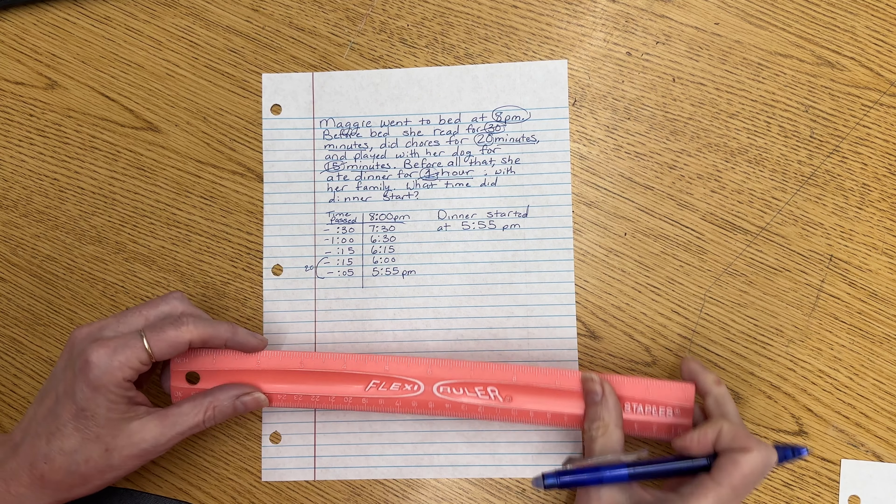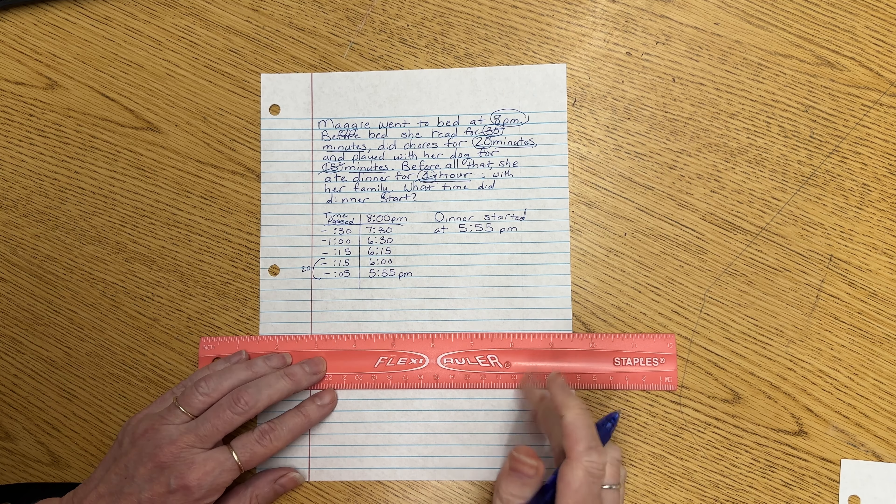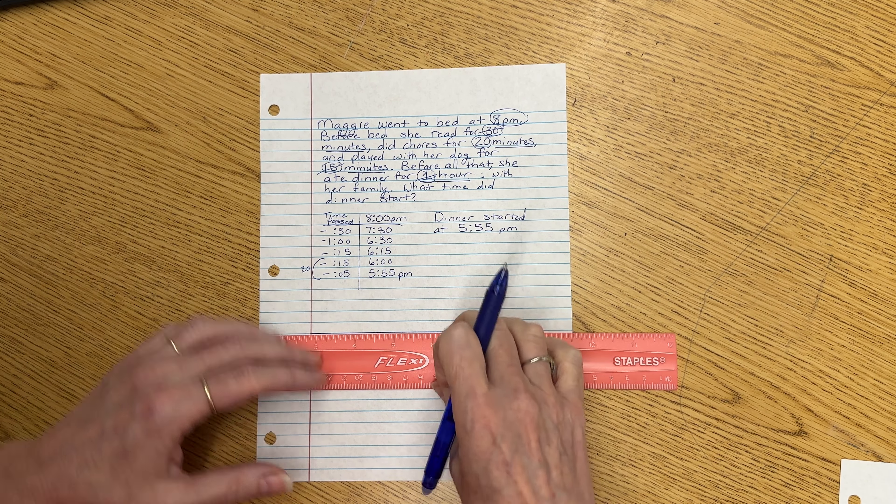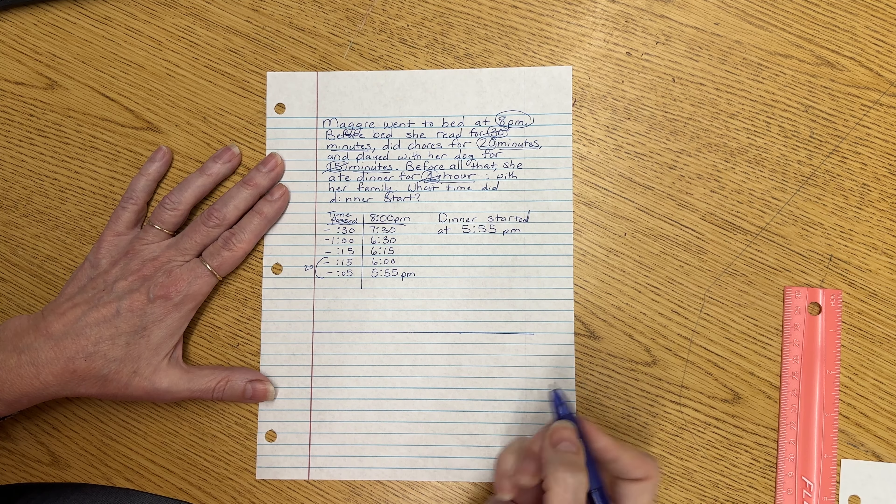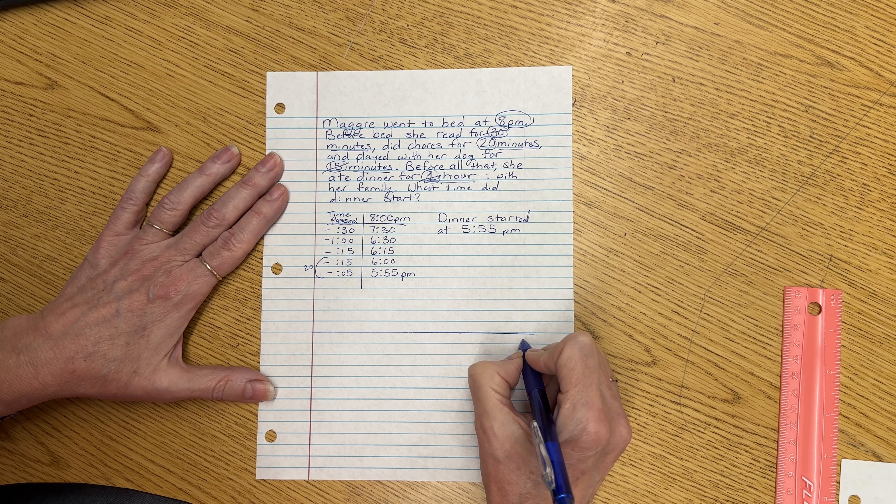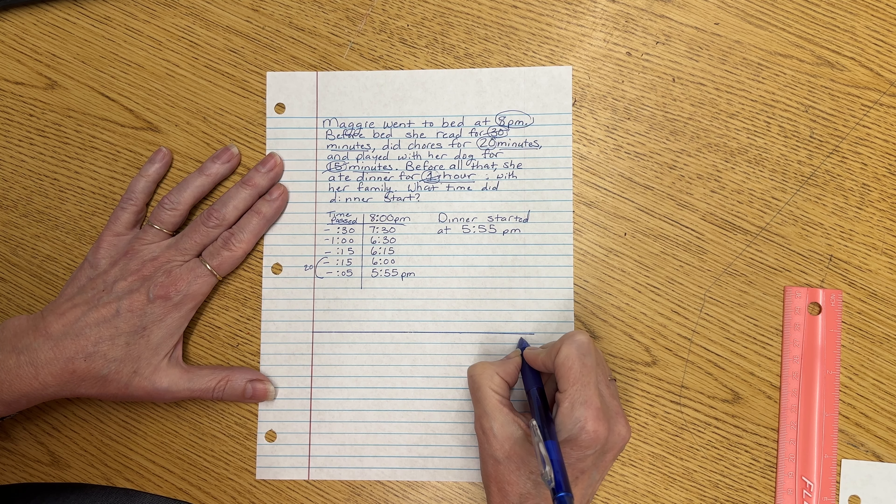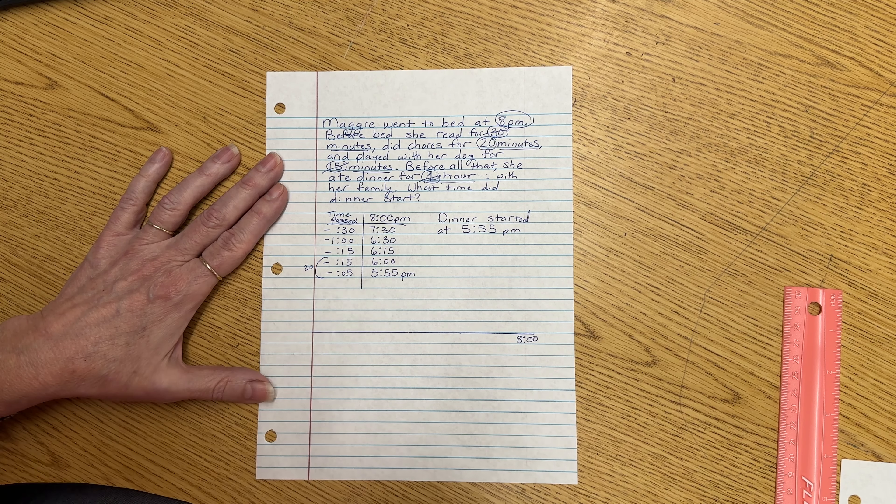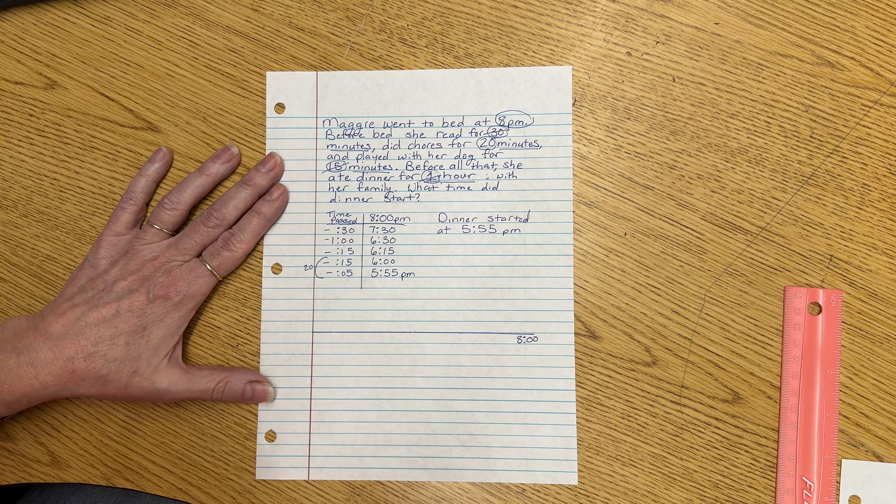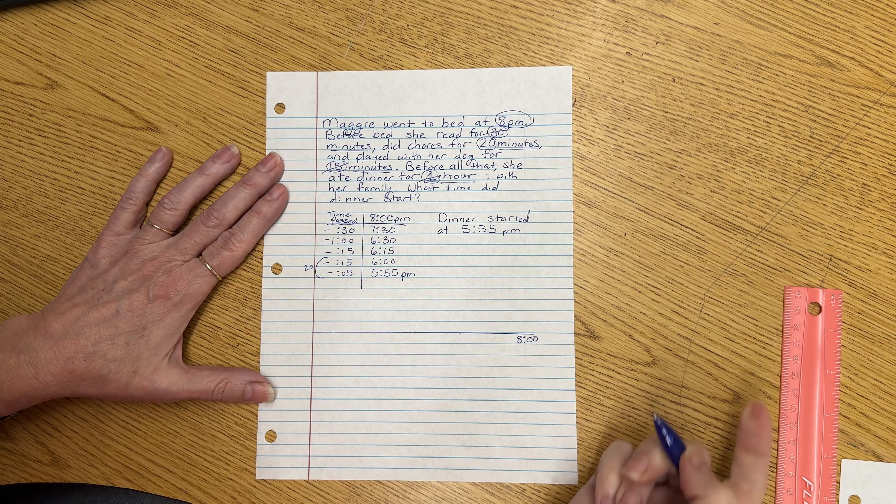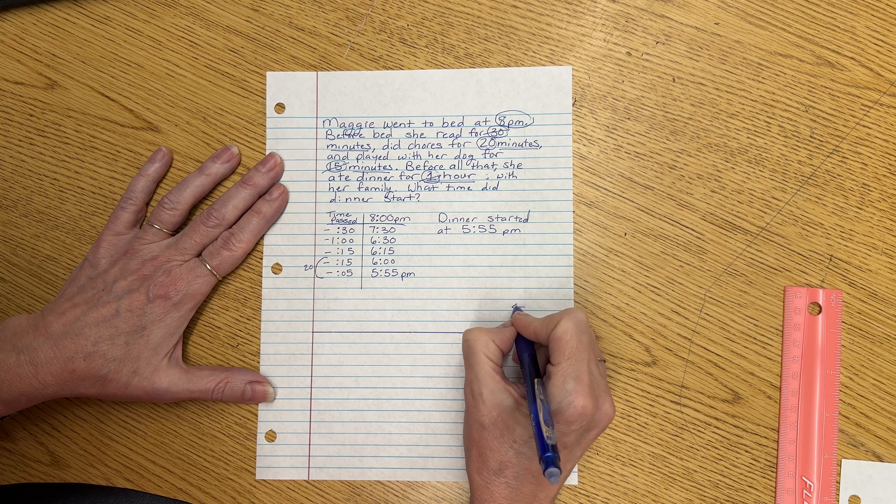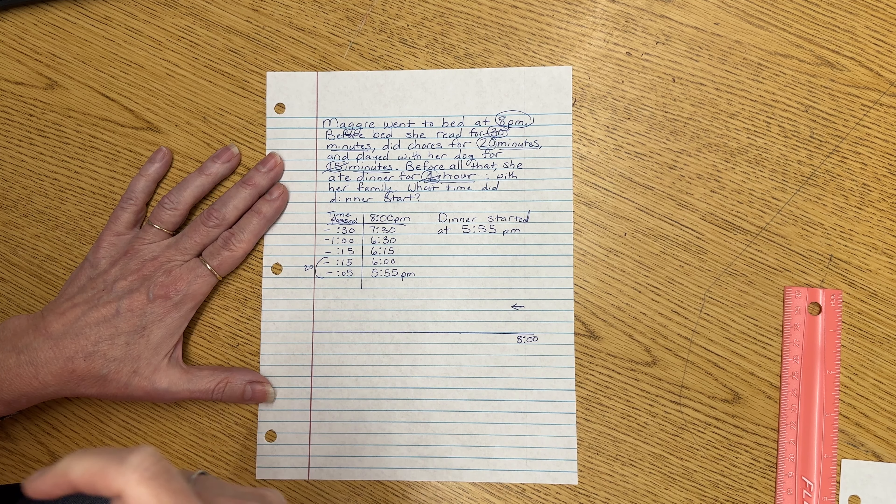Now we're going to do this using the mountains and hills method. Let's draw our number line. And we know we are ending at 8 p.m. So we are going to be going backwards this time. I like to draw myself a little arrow to remind me that I'm going backward in time.